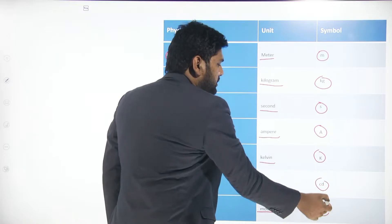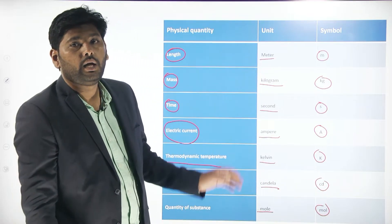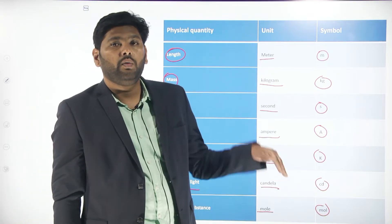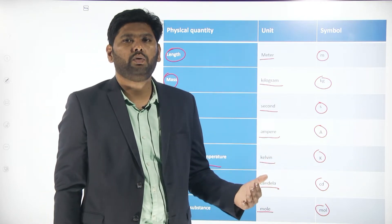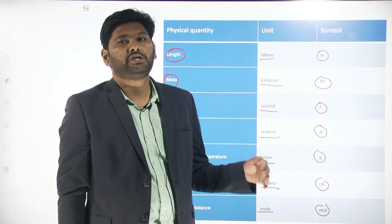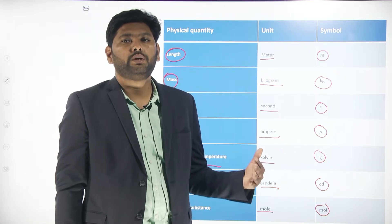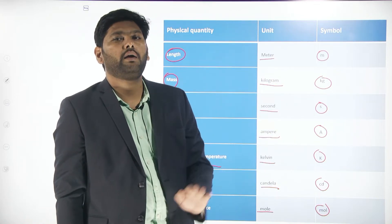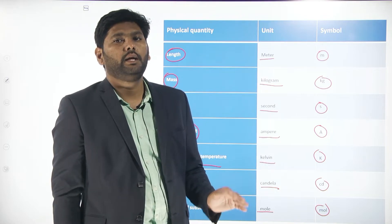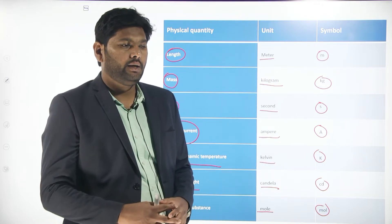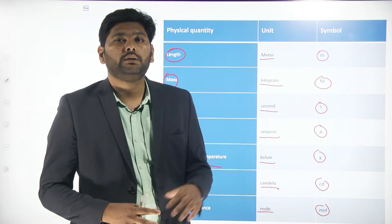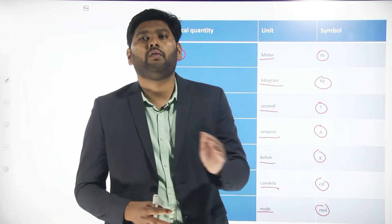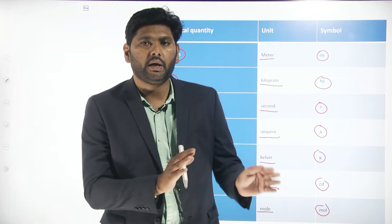With these fundamental quantities we can derive derived quantities. For example, acceleration, velocity, force, and momentum — these are all called derived quantities. It is like the fundamental quantities are alphabets and the derived quantities are words. You can compare them in that way.